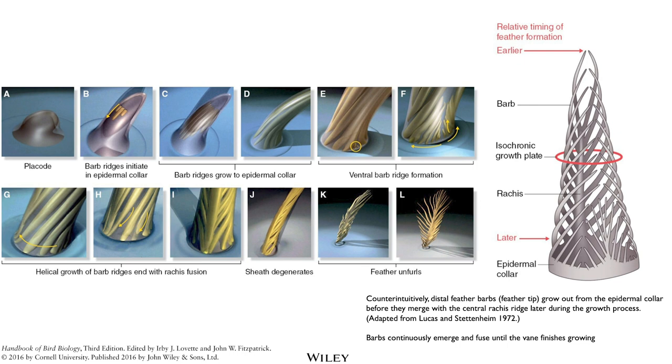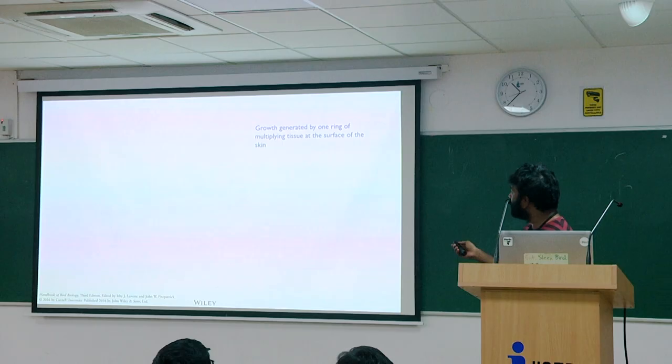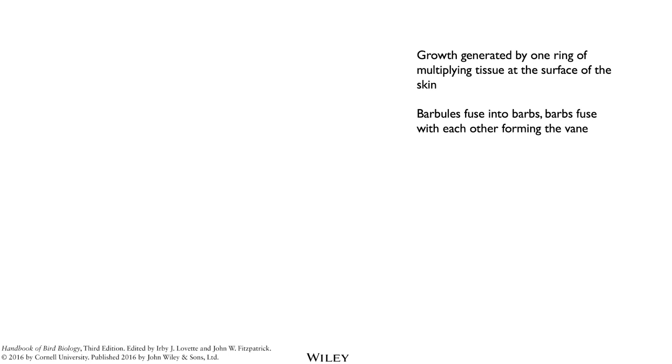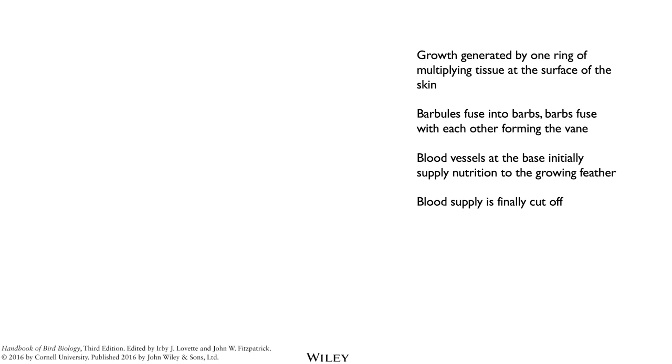These barbs continuously emerge and fuse until the vane finishes growing — the vane is the feathery part of the feather. To summarise: growth is generated by just one ring of multiplying tissue, grows concentrically, everything fuses. Barbs fuse with each other along the way. Initially there are blood vessels in the epidermal collar which provide nutrition for the developing cells, but eventually the blood supply is cut off and the feather is effectively dead.